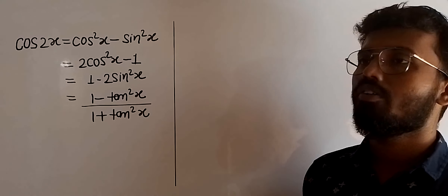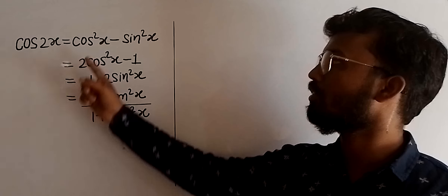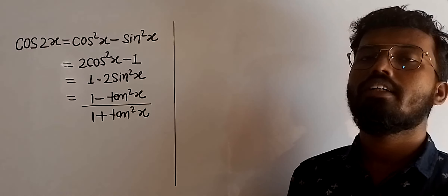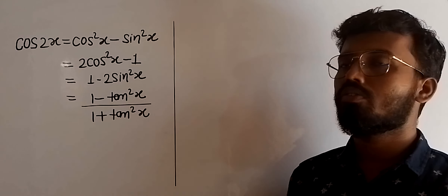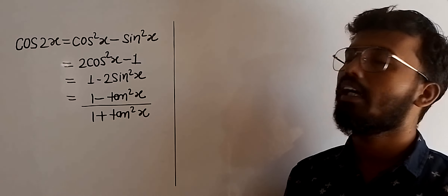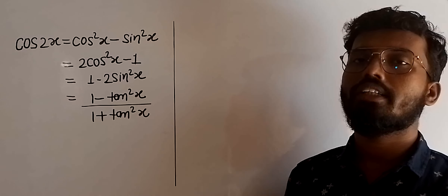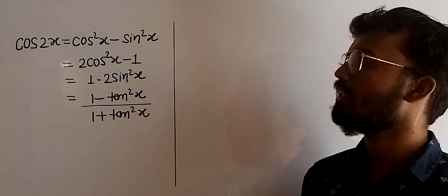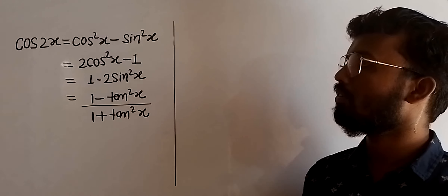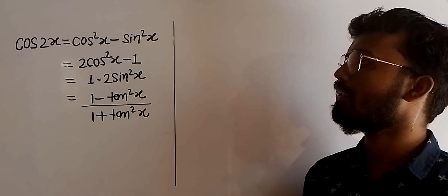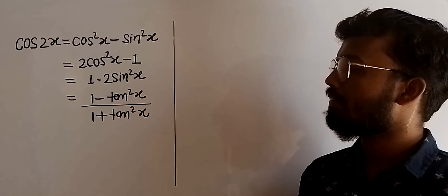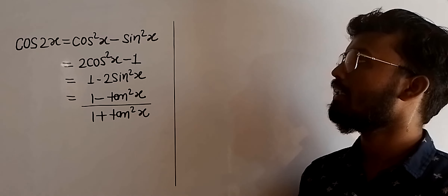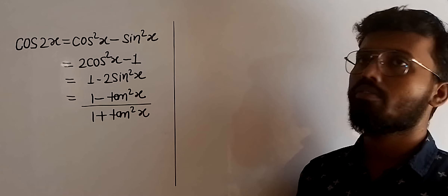The first one will be cos2x = cos²x − sin²x. The second one will be cos2x = 2cos²x − 1. The third one will be cos2x = 1 − 2sin²x. And the fourth one will be cos2x = (1 − tan²x) / (1 + tan²x). Let us understand each identity one by one.